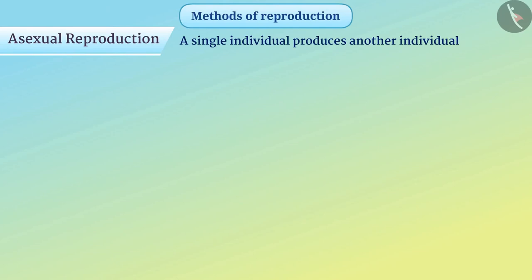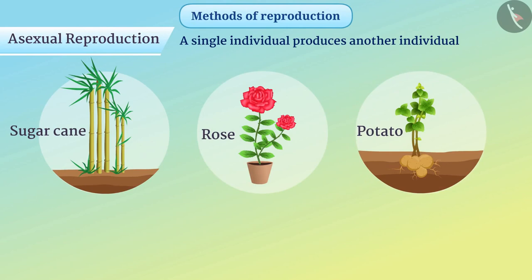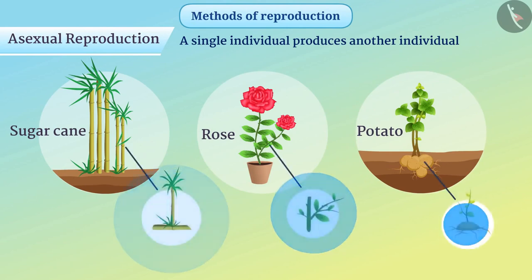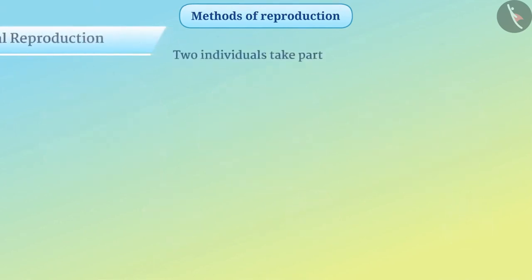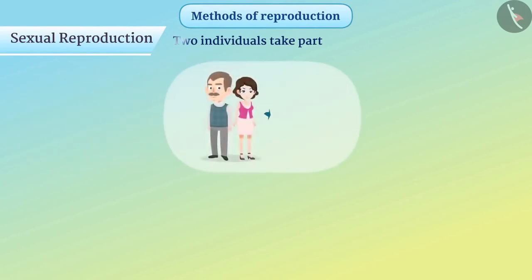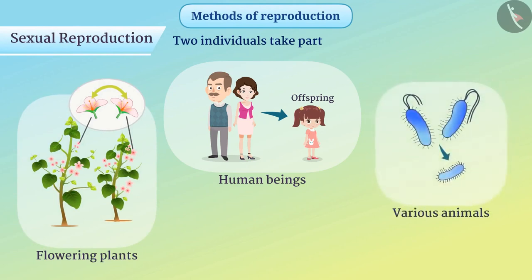Some plants like sugar cane, rose, and potato can be produced from any part of the plant — this is also asexual reproduction. In contrast, the reproduction in which two individuals take part is called sexual reproduction. For example, human beings, flowering plants, and various animals produce new organisms by sexual reproduction.